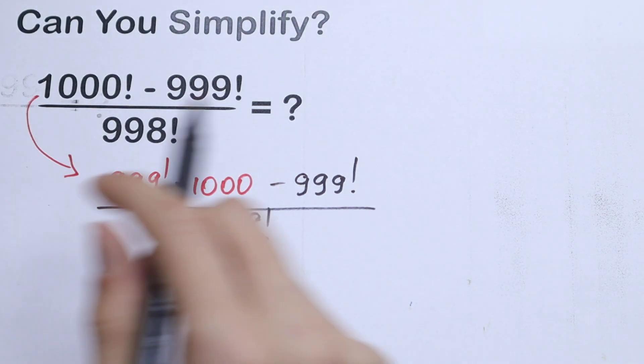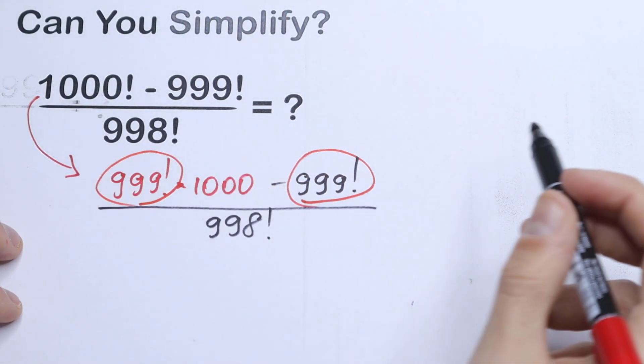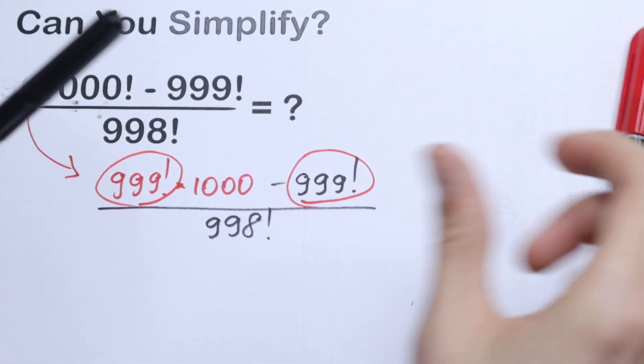So what can you see right here? This 999 factorial and this one is common. So we can factor out this 999 factorial. Let's do this.